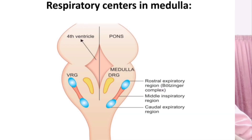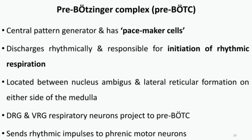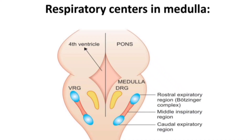In the medulla, the first group is the pre-Bötzinger complex, considered the pacemaker cells of respiration — it controls the rhythm of automated breathing and initiates inspiration. The second group is the dorsal respiratory group (DRG), and the third is the ventral respiratory group (VRG).